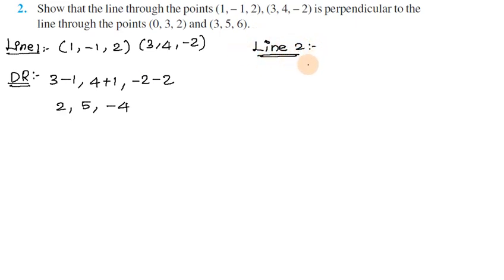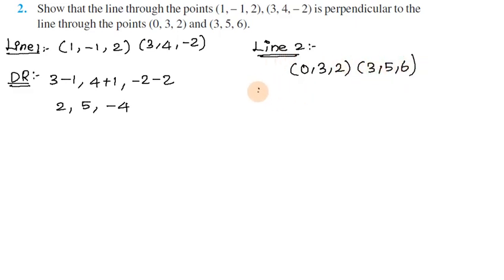Now find the direction ratio of Line 2. Line 2 goes from point (0, 3, 2) to point (3, 5, 6). Direction ratio: 3 minus 0, 5 minus 3, 6 minus 2.